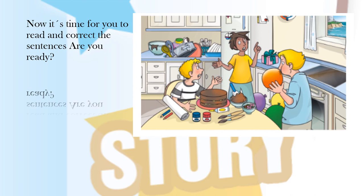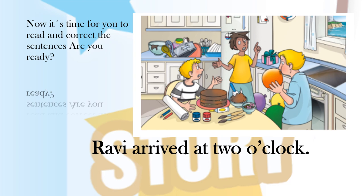Now it's time for you to read and correct the sentences. Are you ready? Ravi arrived at 2 o'clock — what's wrong in that sentence? If you need time to think about it, you can pause the video. That's correct: 2 is wrong. The answer is 3. Ravi arrived at 3 o'clock.